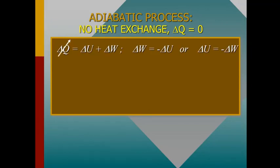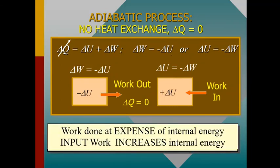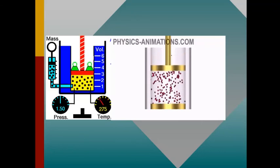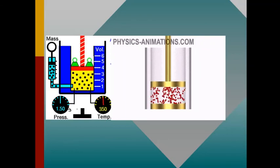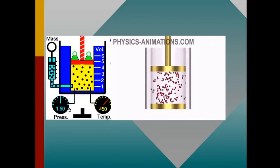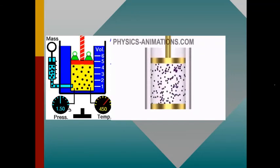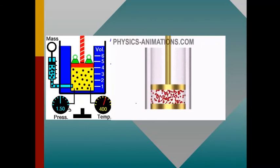In the adiabatic process, there is no heat exchange, so delta Q = 0. From the first law: delta Q = delta U + delta W, so delta W = minus delta U. Work done is at the expense of internal energy; input work increases internal energy. In the animation, molecules expand and compress slowly, with no heat exchange.